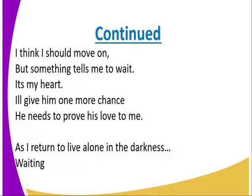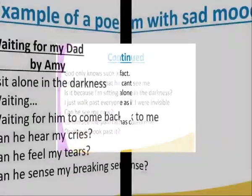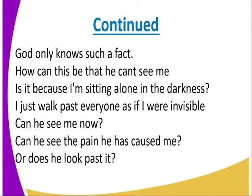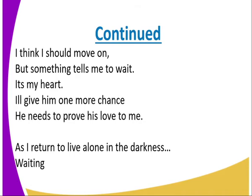If you look at the poem, what is the mood? You can see that the mood is somber, the mood is nostalgic, the mood is melancholic, because we can see that the persona in the poem is waiting for his dad. It's as if the dad has gone missing, and the persona — a child — is still waiting for the dad to come back, sitting in darkness, still hopeful but heartbroken. So you can say the mood is sad, melancholic, nostalgic or gloomy.